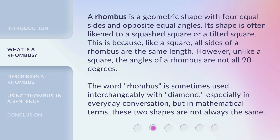However, unlike a square, the angles of a rhombus are not all 90 degrees. The word rhombus is sometimes used interchangeably with diamond, especially in everyday conversation, but in mathematical terms, these two shapes are not always the same.